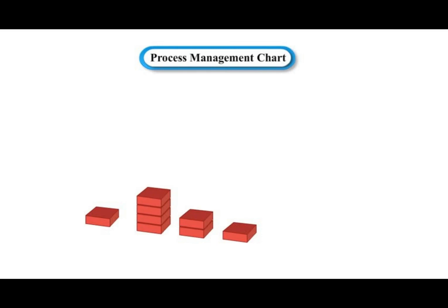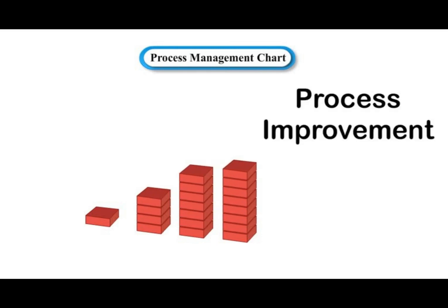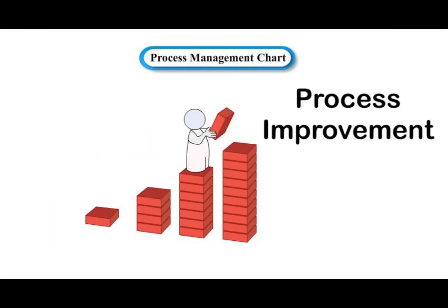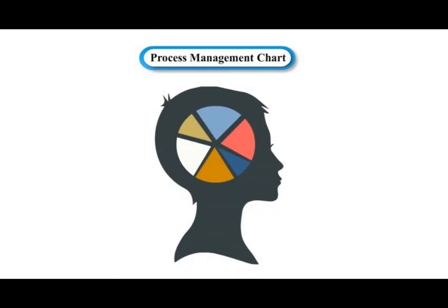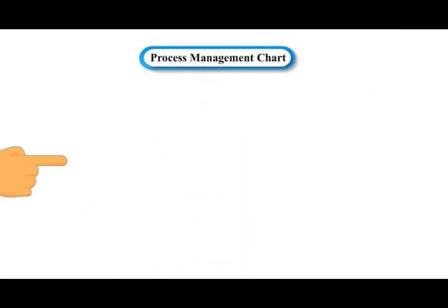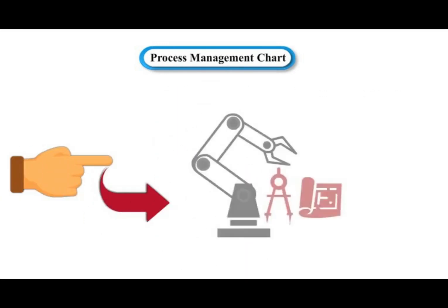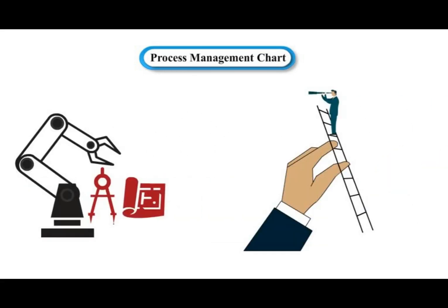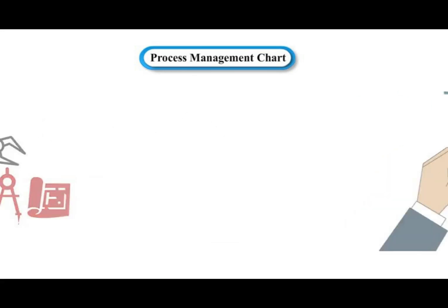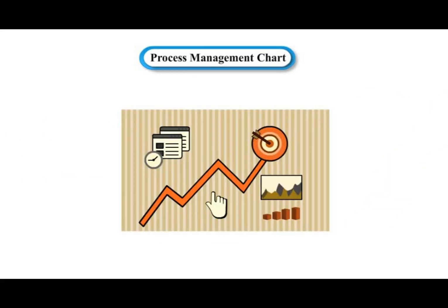Process improvement is all about narrowing down to the vital few factors that influence the behavior of a system or a process. The only way to do this is to measure and observe your process characteristics and your critical to quality characteristics.